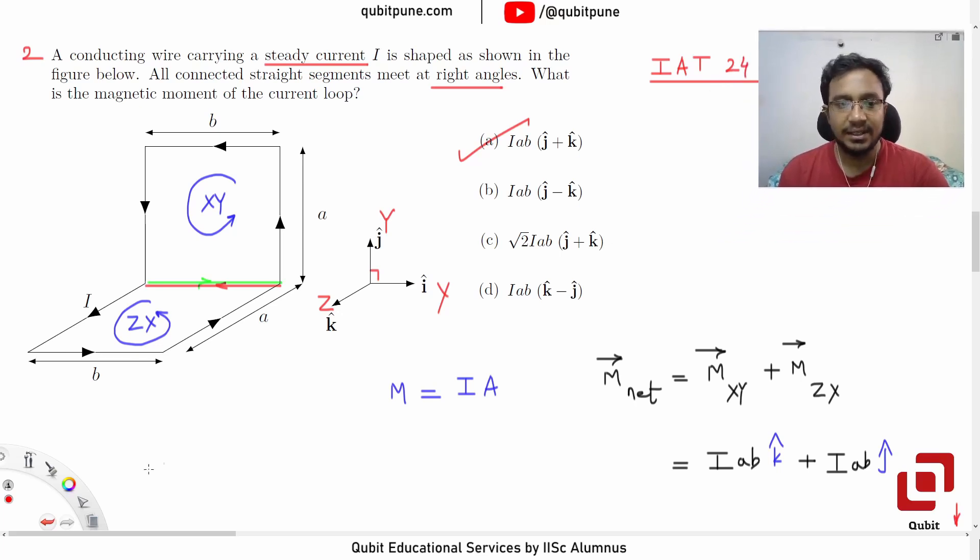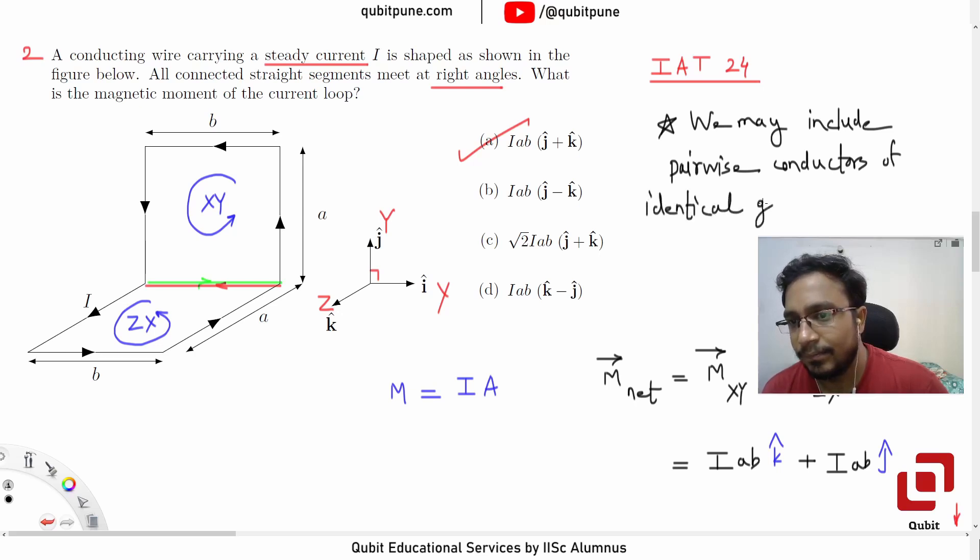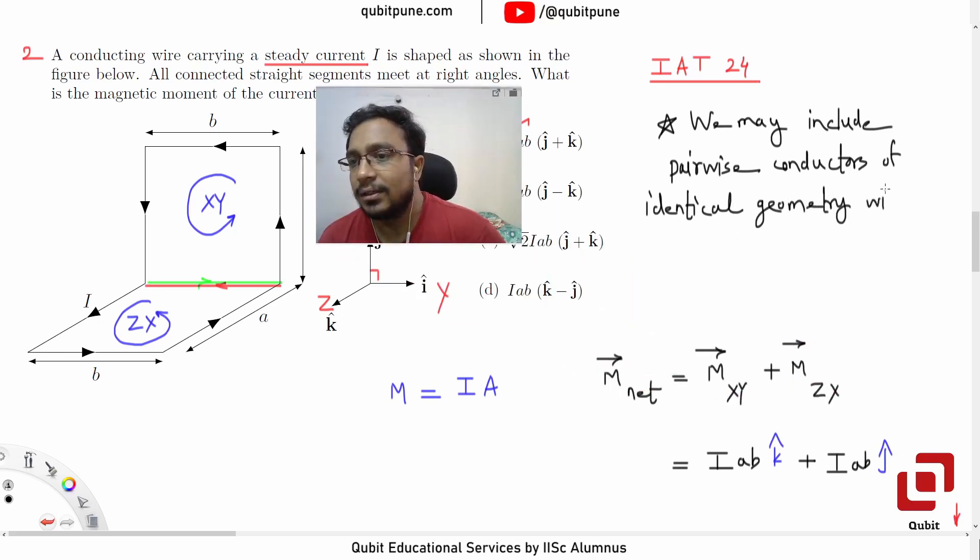So the trick here is we may include pairwise conductors of identical geometry with opposite directions of current, otherwise it is very difficult to solve it.